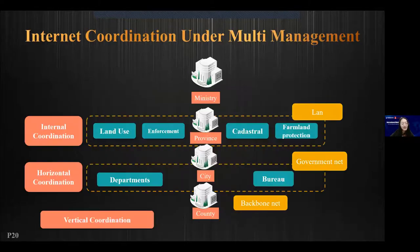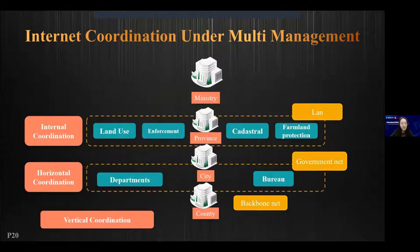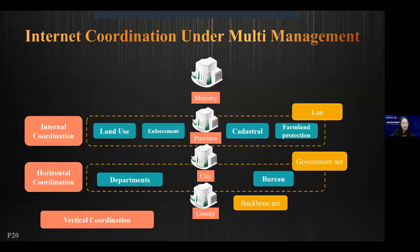There are several levels of government management — from ministry, province, city, and county level — through vertical and horizontal collaboration among different departments to solve the data integration problem. The horizontal coordination can be achieved through different local area networks and government networks, while vertical coordination can be achieved through the backbone network.